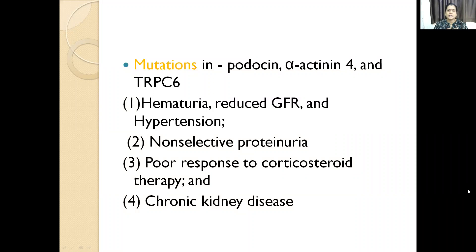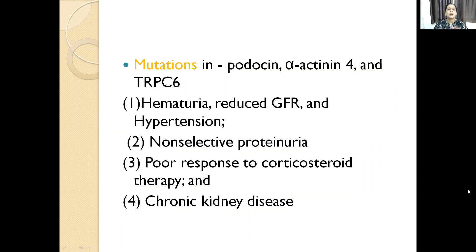After there is damage to the epithelium, there is entrapment of plasma proteins and then protein leak. Because of this, there will be hyalinosis, wherein the plasma proteins get insudated and can block the capillary wall. Fibrin strands come to the rescue, and there will be sclerosis with extracellular matrix deposition. This is the pathogenesis of FSGS.